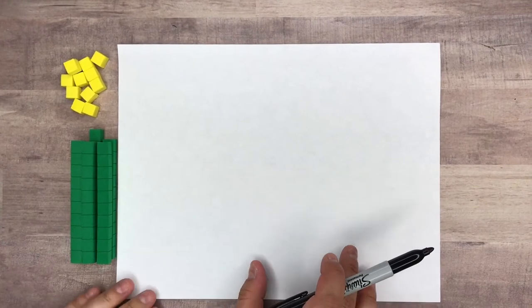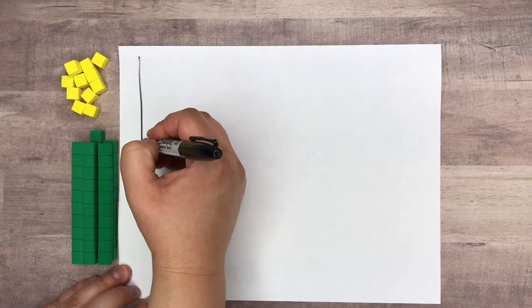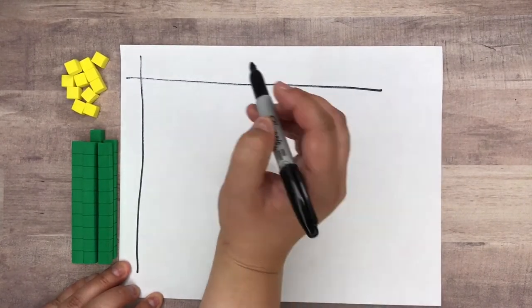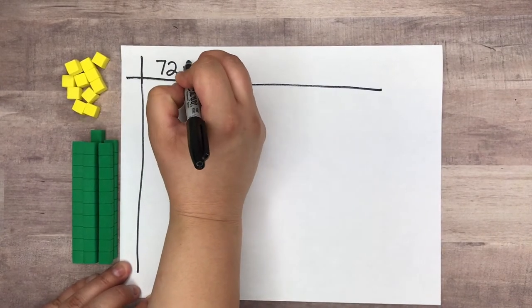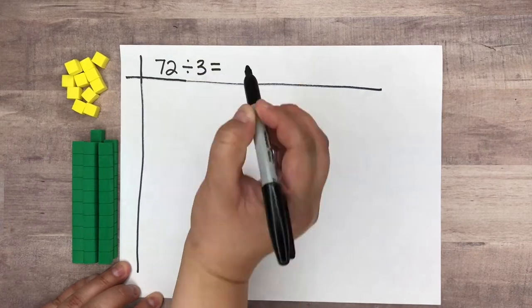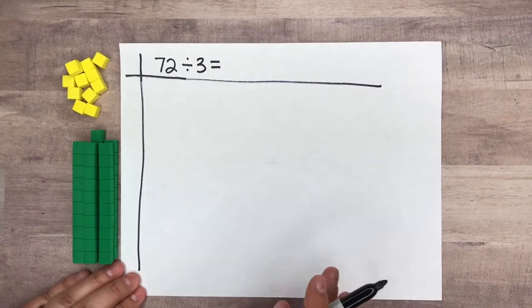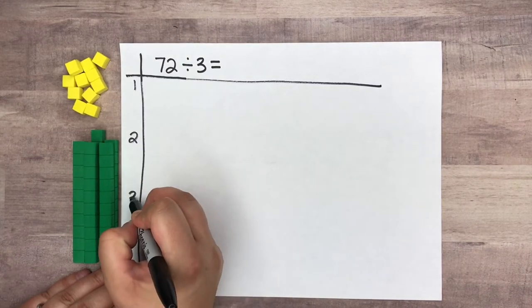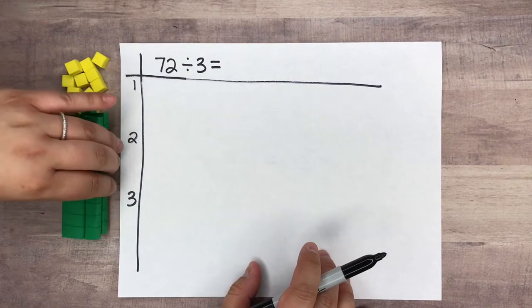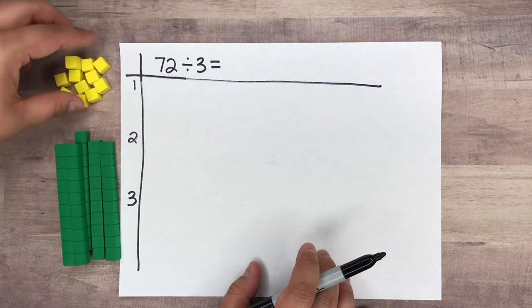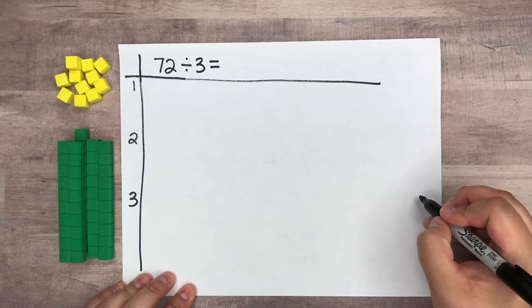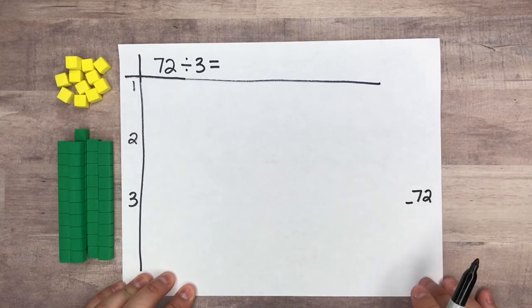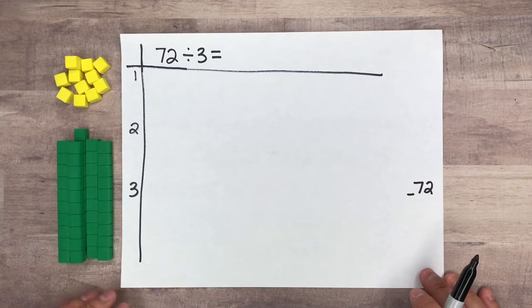Let's do another example. I have my tens and ones counted out for this next division. In this equation we're going to try 72 divided by 3. I know I have 3 groups to divide 72 into. I have 6 tens, which is 60, and 12 ones, which gives me 72. I'm going to be subtracting from 72 until I get to 0 or a remainder.